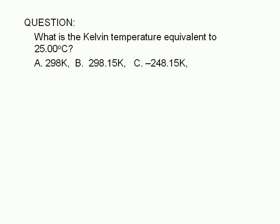What is the Kelvin temperature equivalent to 25.00 degrees Celsius? a. 298 Kelvin, b. 298.15 Kelvin, or c. negative 248.15 Kelvin.